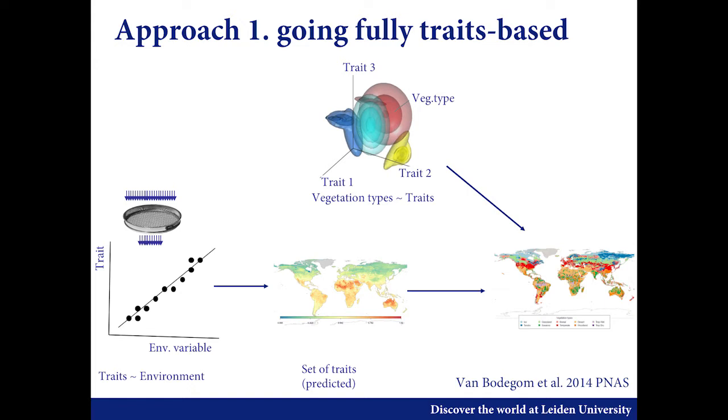Based on assembly theory, the environment selects for traits that may prosper at those conditions. You can derive some of those trait-environment relationships, couple that to your high-resolution soil and climate files, and then make your trait maps. At the same time, we know there is a particular expression of traits in a given plant functional type. If you know which part of trait space is occupied by a PFT, you can do some smart statistics, couple your trait maps to a position in trait space, and predict the probability of finding a particular PFT. Then you don't need PFTs anymore, because the PFT becomes a posterior rather than an input to your model.